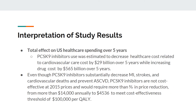A table adapted from Table 4 shows the effect of PCSK9 inhibitors on total healthcare spending over 5 years, including net healthcare costs for HFH and ASCVD with ezetimibe and PCSK9 treatments. PCSK9 inhibitor use was estimated to decrease cardiovascular care costs by $29 billion over 5 years, while increasing drug costs by $565 billion over 5 years. Although PCSK9 inhibitors substantially decrease MI, strokes, and cardiovascular deaths, they are not cost-effective at 2015 prices and would require more than a two-thirds price reduction to meet cost-effectiveness thresholds.